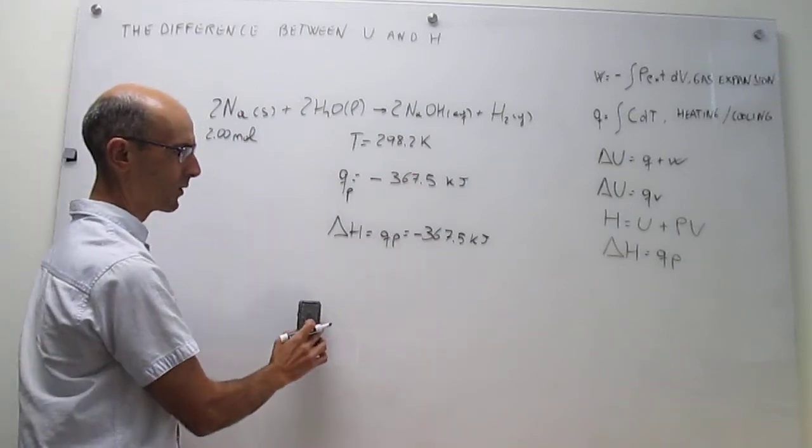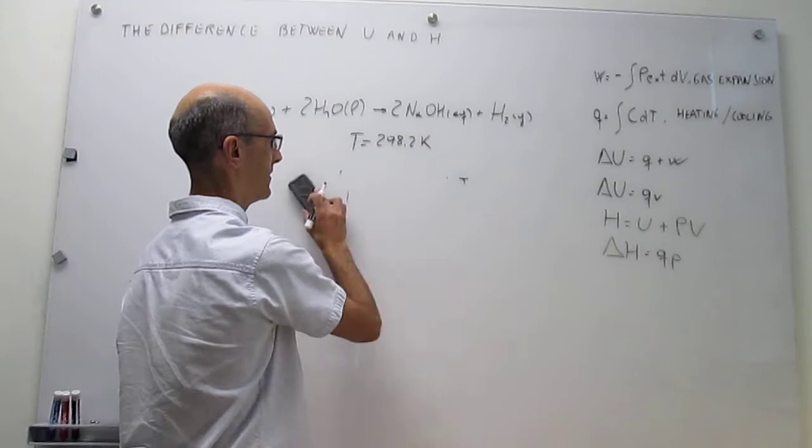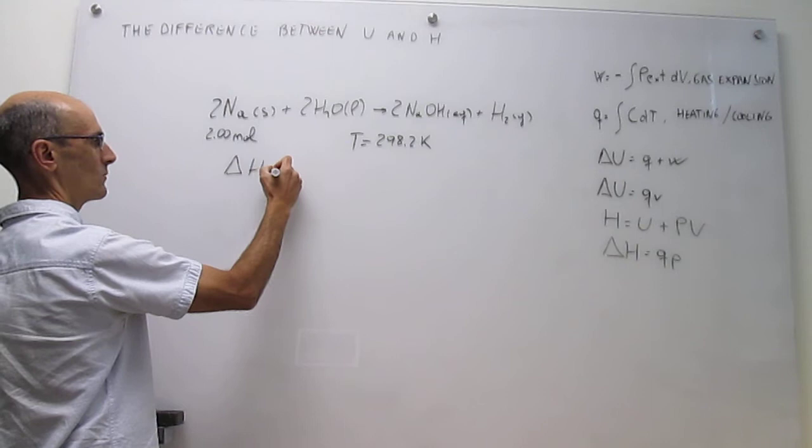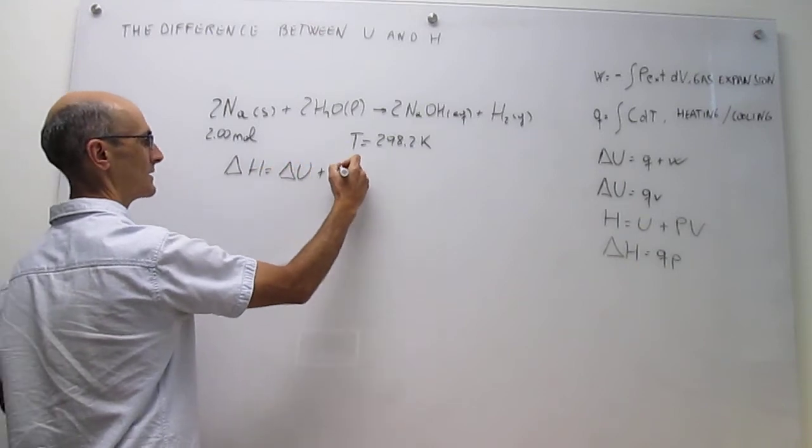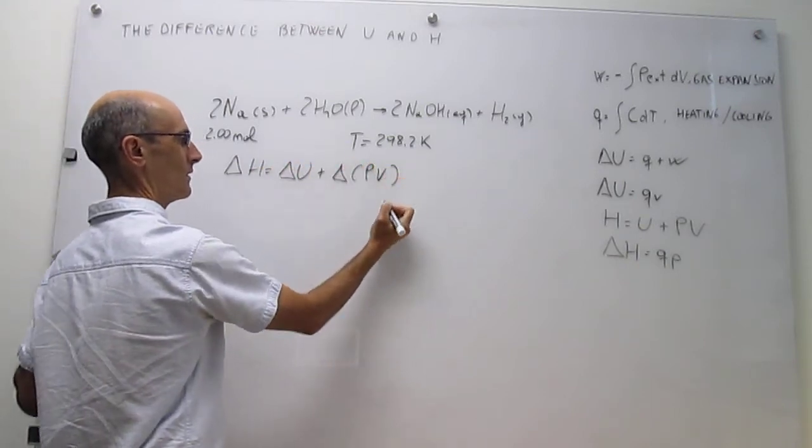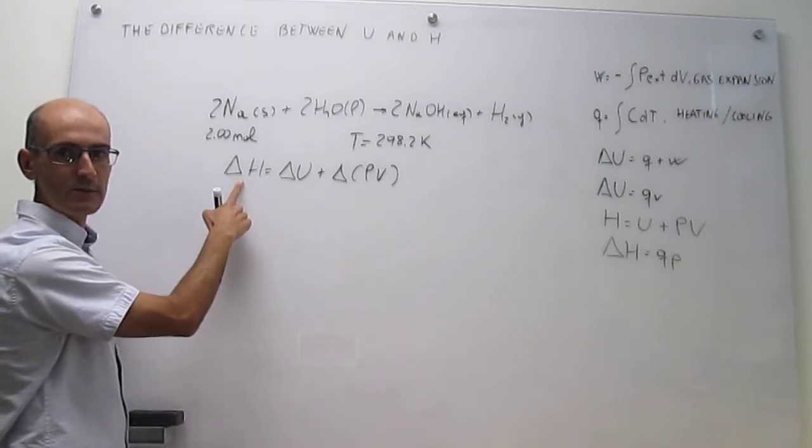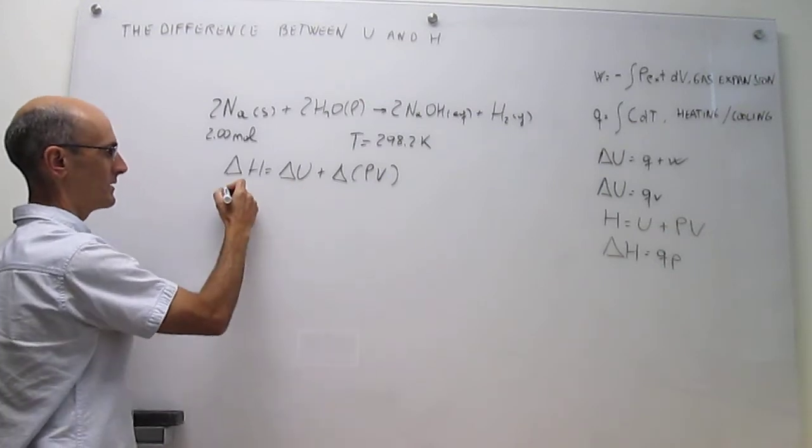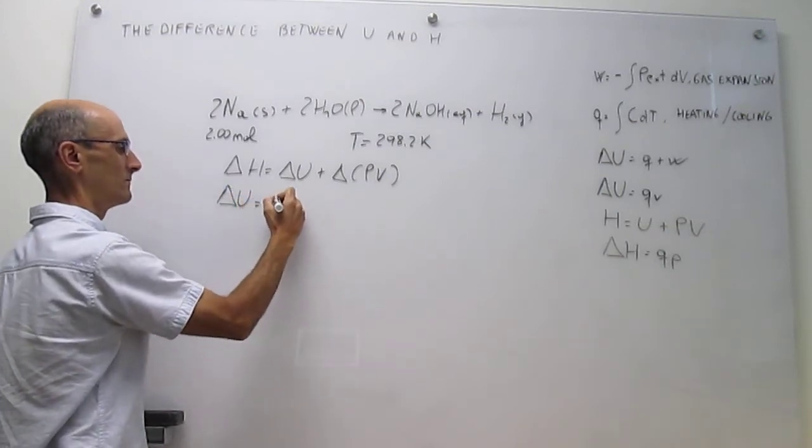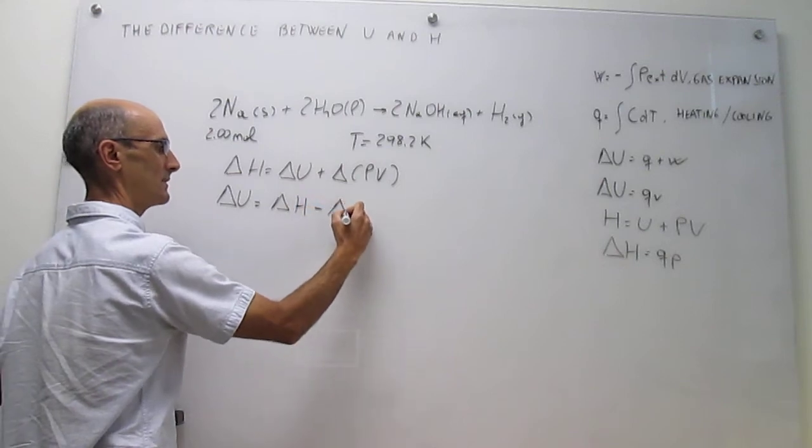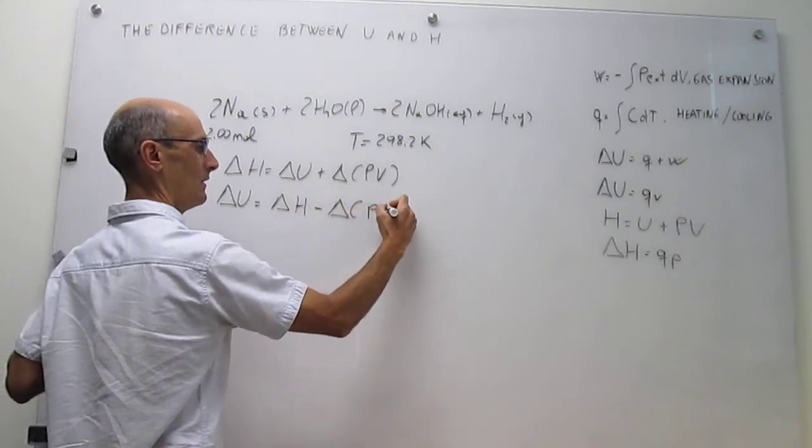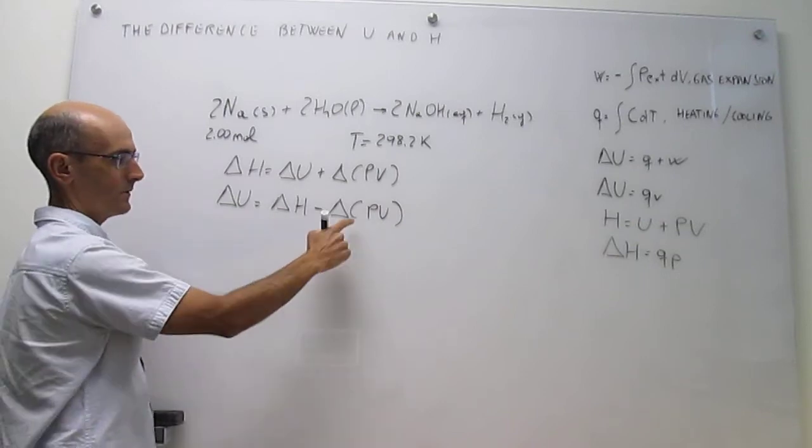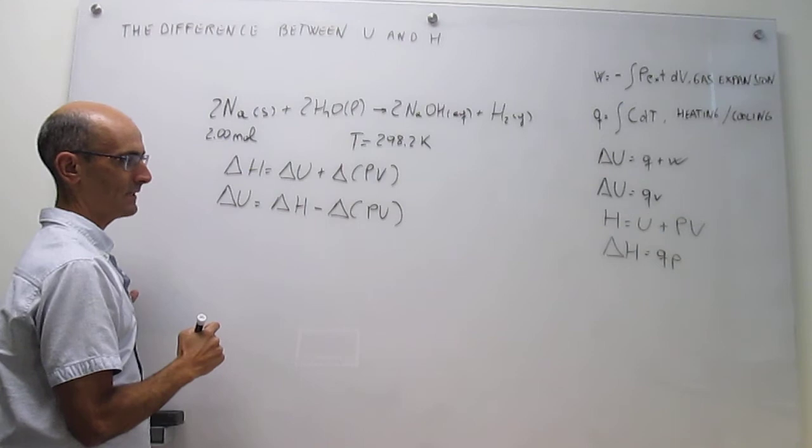Here is the definition of enthalpy: delta H is equal to delta U plus delta PV. We know delta H is minus 367.5 kJ. Our goal is to calculate delta U, and we can solve for it right away: delta U equals delta H minus delta PV. The only problem we have to calculate the value of delta U is to find what this delta PV is.